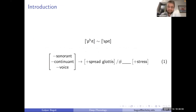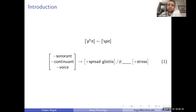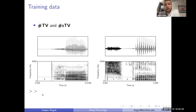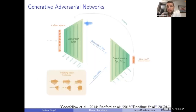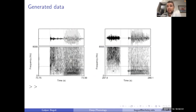We start with one of the simplest processes in phonetics and phonology: the English pit/spit distinction. In English, a stop before a stressed vowel has aspiration, but if you add an 's' before it, the aspiration is gone — the English aspiration rule. In classic SPE-type phonology this would be written as a rule, but we can model this from the bottom up. We train the network on time-sliced data with TV and STV sequences in a GAN network.